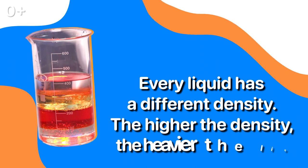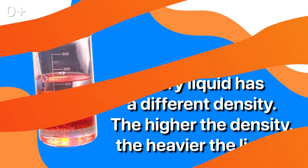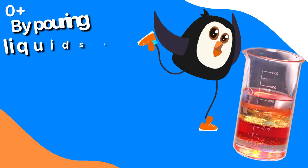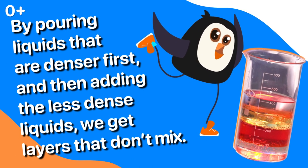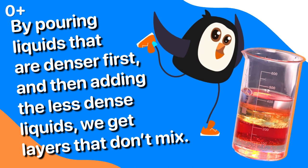Do you want to know how it worked? Every liquid has a different density. The higher the density, the heavier the liquid. By pouring liquids that are denser first, and then adding the less dense liquids, we get layers that don't mix.